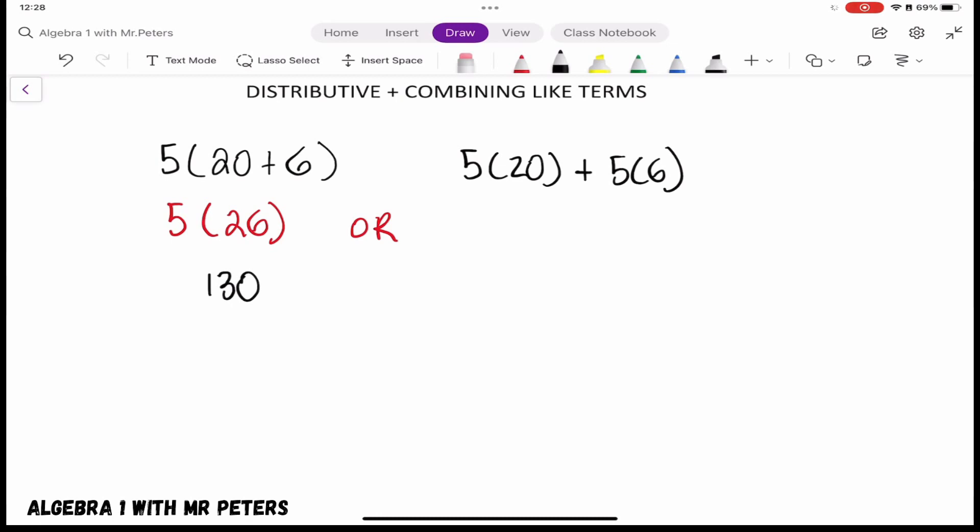at the second example, when we do 5 times 20, that's going to give us 100, plus 5 times 6, which is 30. Once we add those two, we get the same exact answer. So this is what we're talking about when we say distribute and combine like terms.